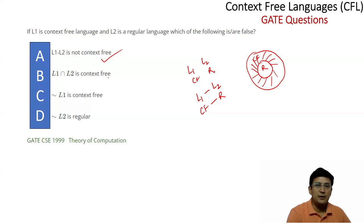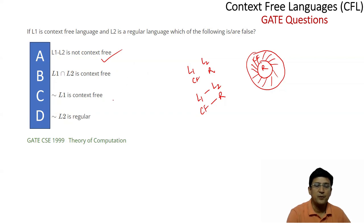The next statement: L1 intersection L2 is context-free. L1 intersection L2 means we take the intersection of a context-free language with a regular language, and this will be context-free. So this statement is true, but we have to select only the false statements.